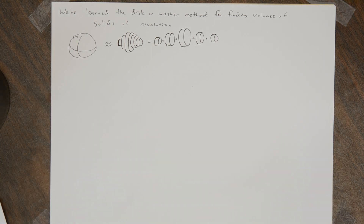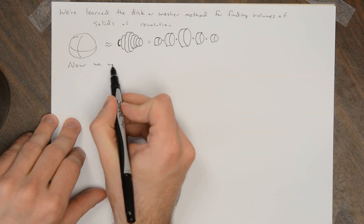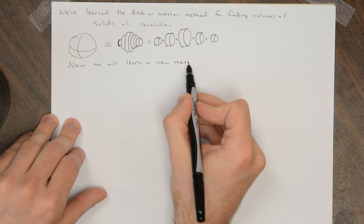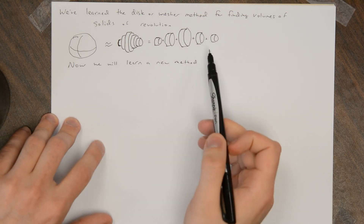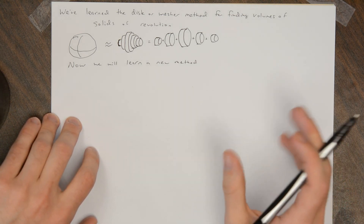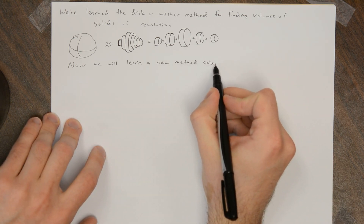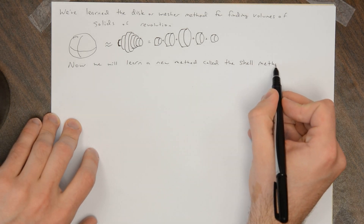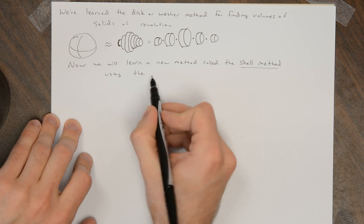And now we want to learn a new method. We're going to approximate our shape with simple shapes that we know the volumes of — but not exactly cylinders, but sort of the outsides of cylinders, like a cylinder with a hole drilled out of it, like a pipe with a really thick wall. This is called the shell method, using the shells of cylinders.